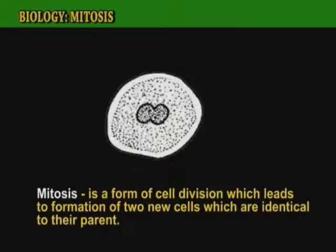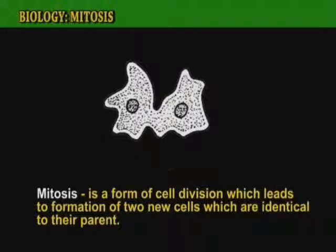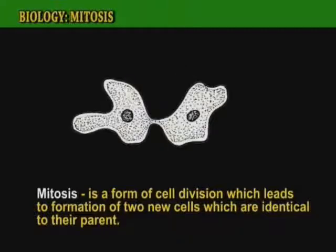This process is called mitosis. Mitosis is the form of cell division that leads to the formation of two cells which are identical to their parent.